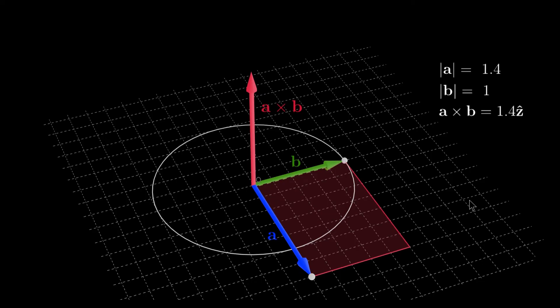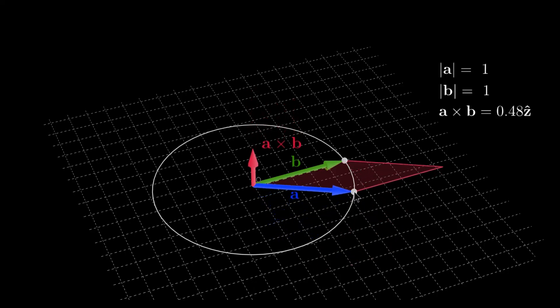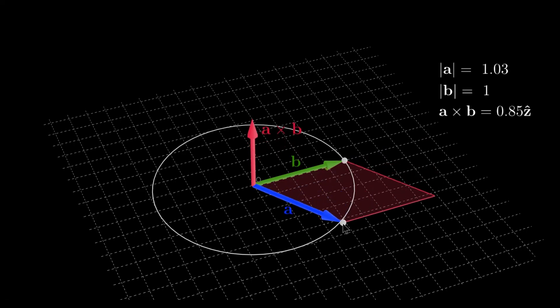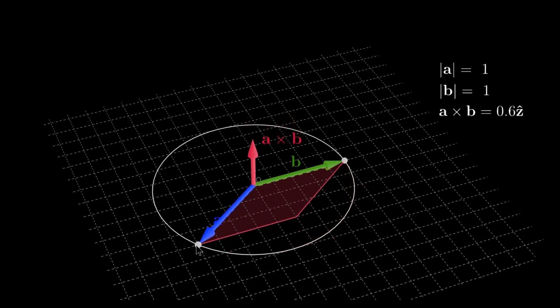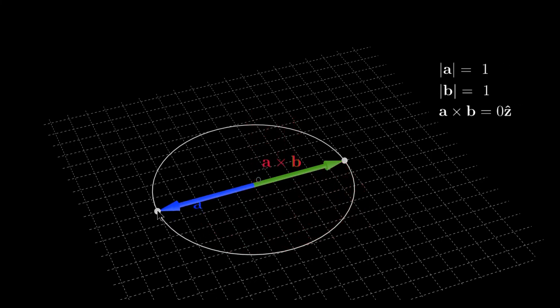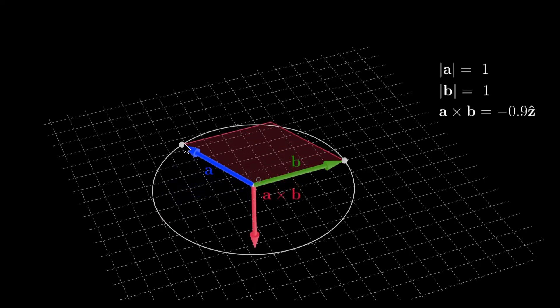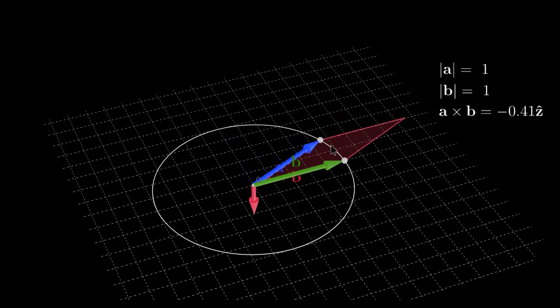As an interesting case, what if the two vectors are unit vectors? In this case, the cross product ranges from zero when they are parallel, then it slowly increases until it reaches one when they are orthogonal, then it starts decreasing again, and it's zero when they are anti-parallel, increases again in the opposite direction until it reaches minus one when they are orthogonal, and then it goes to zero when they are parallel again.